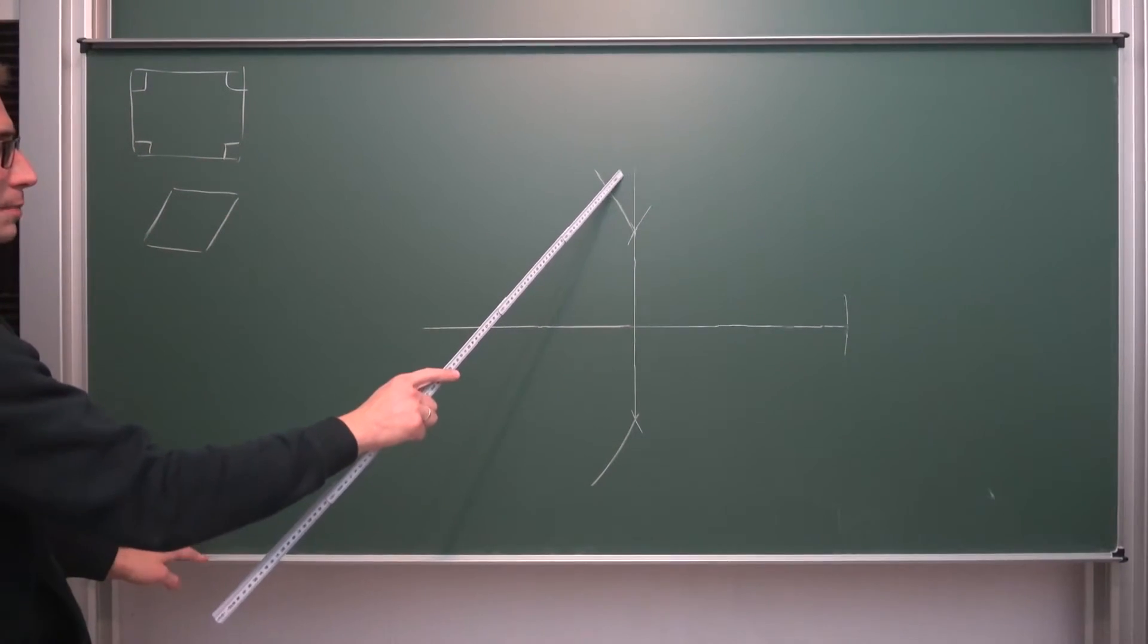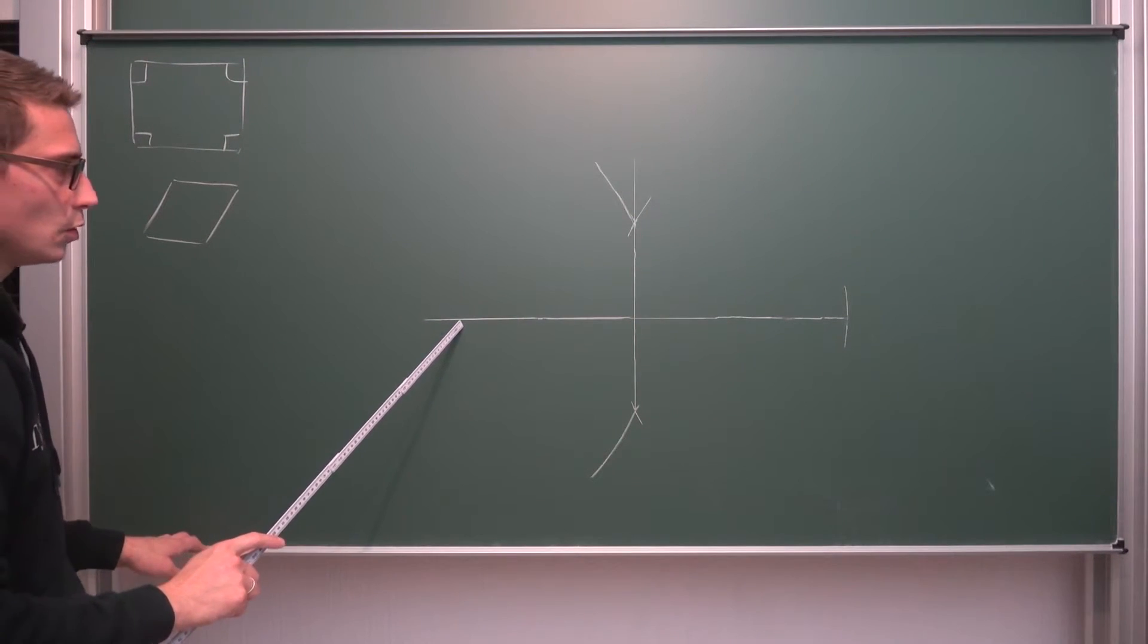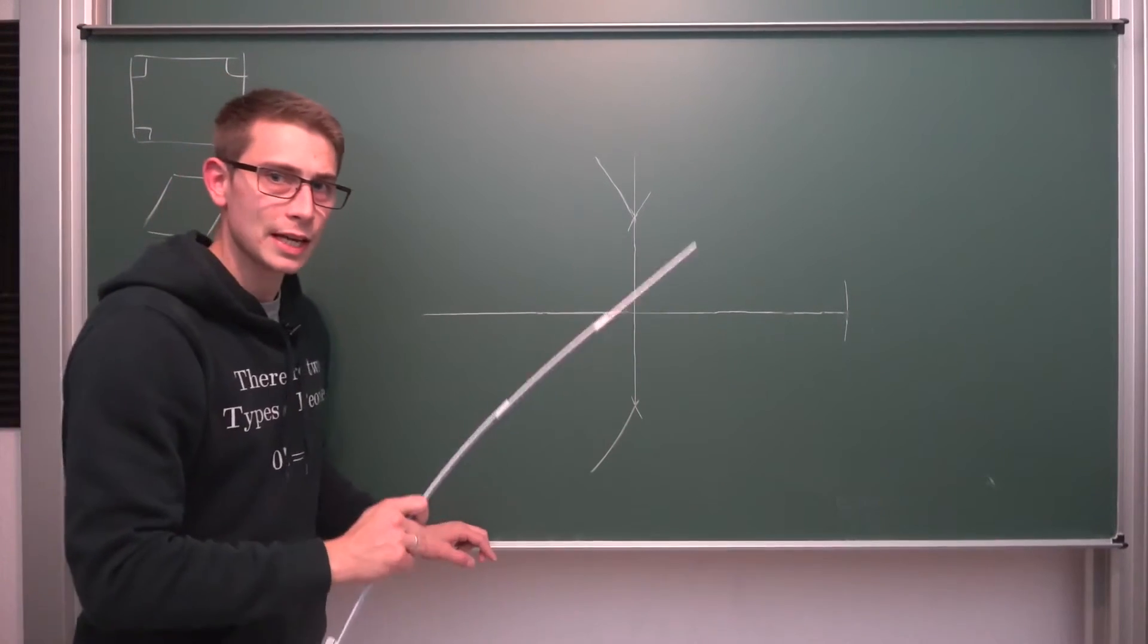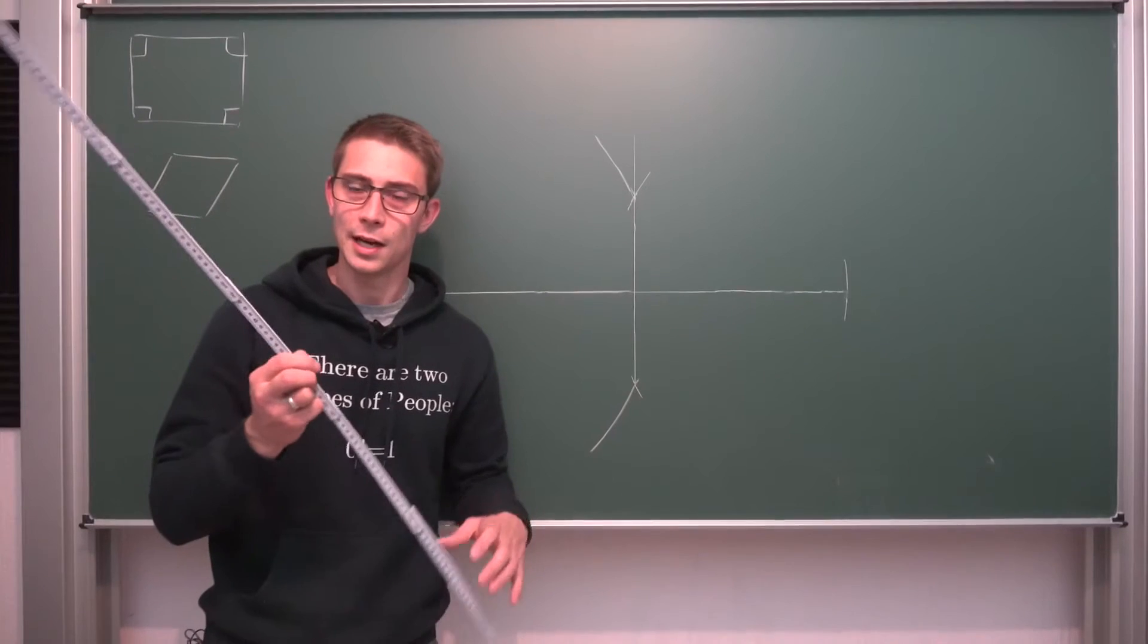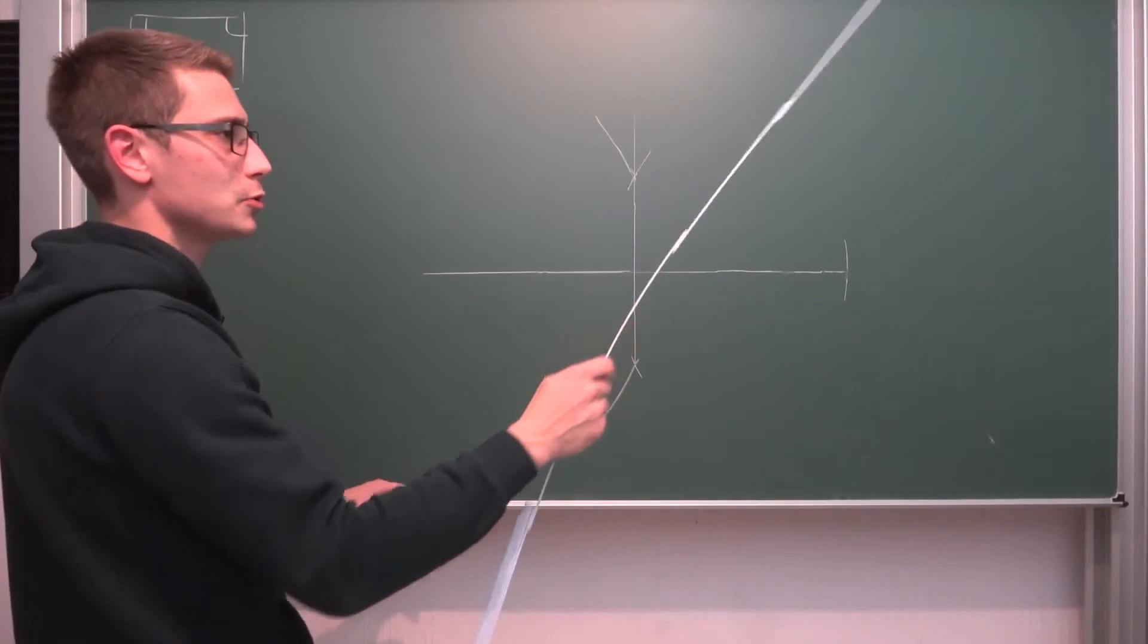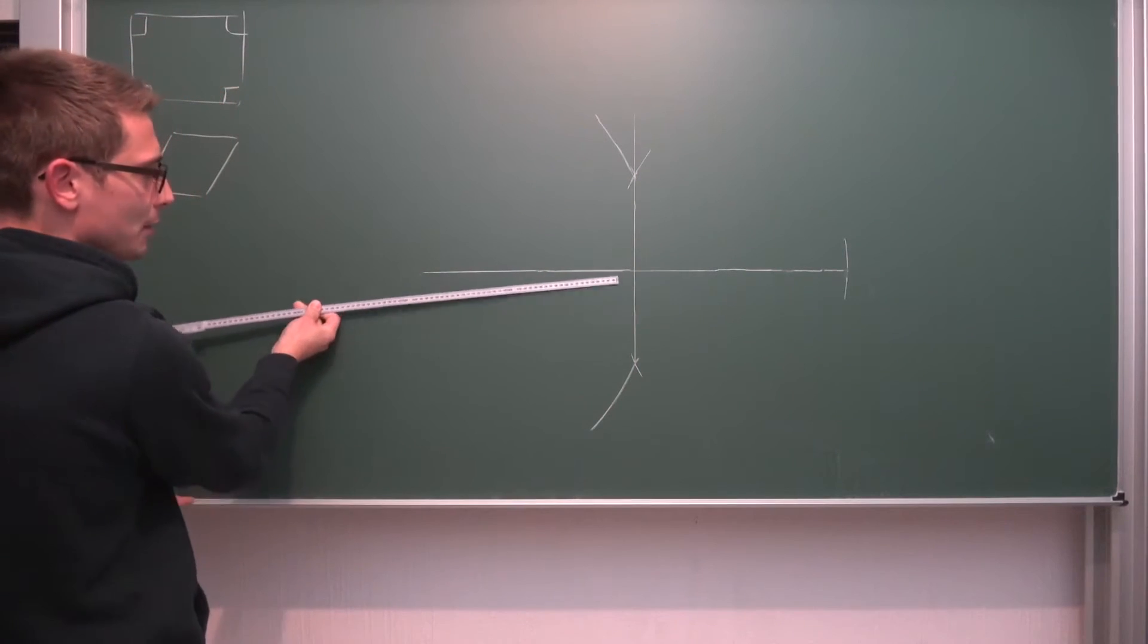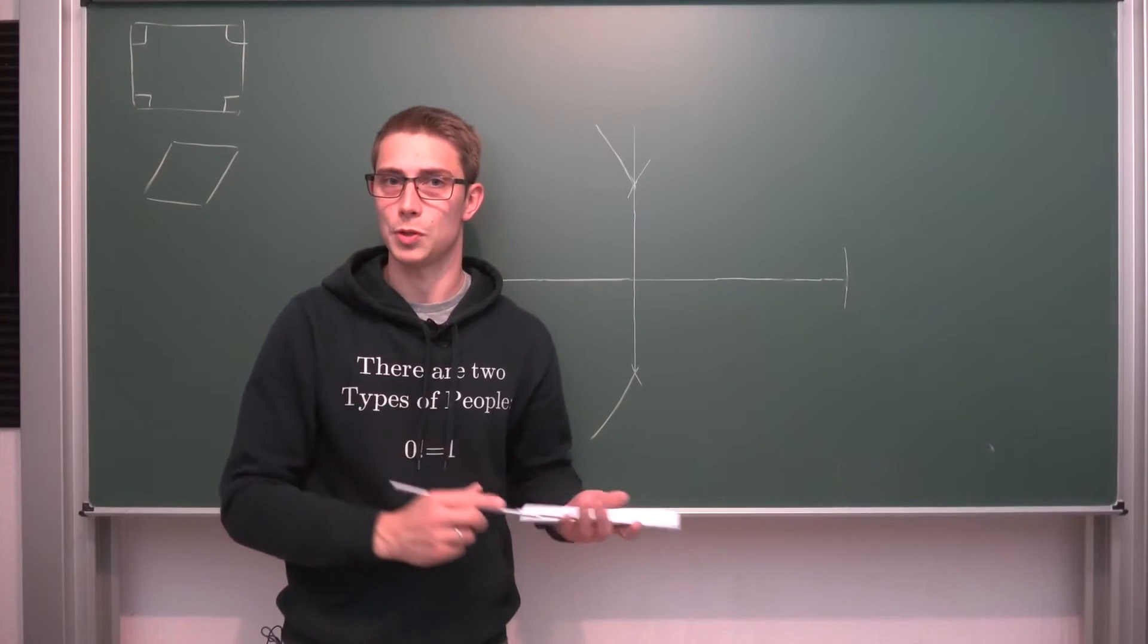This side length here must be exactly the same length as this one. So we kind of need to extend this side length in such a way that it is the same length as this one right here. How would you do that? I mean you can't measure stuff. You just have a random arbitrary straight edge so we can't start measuring things. We don't know about units.